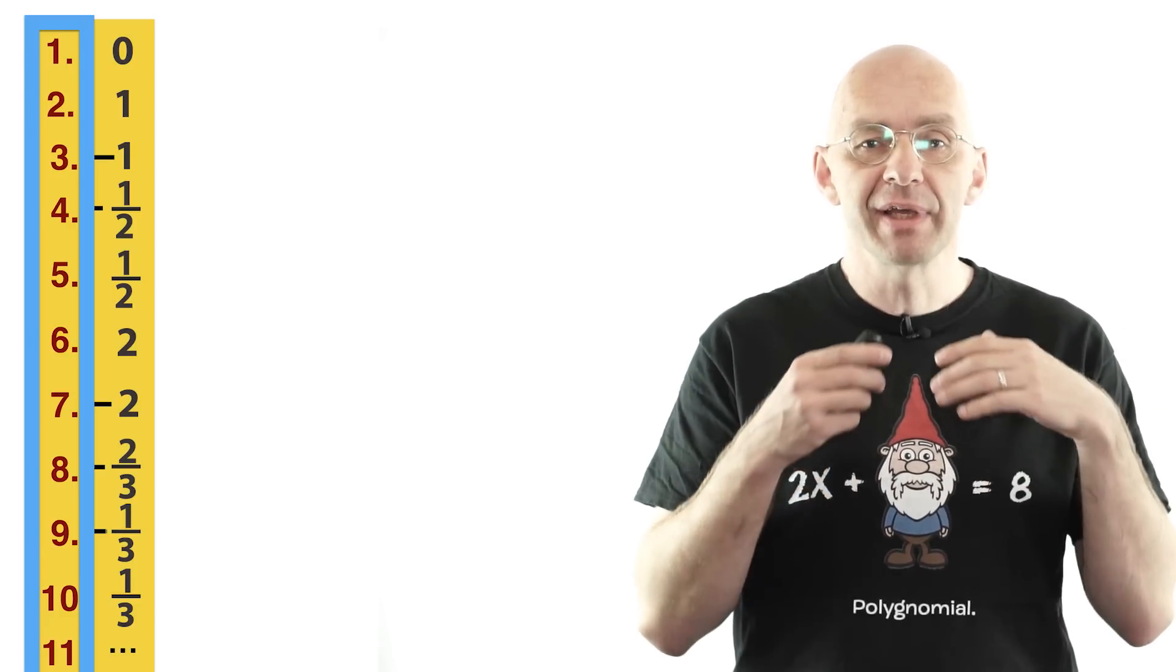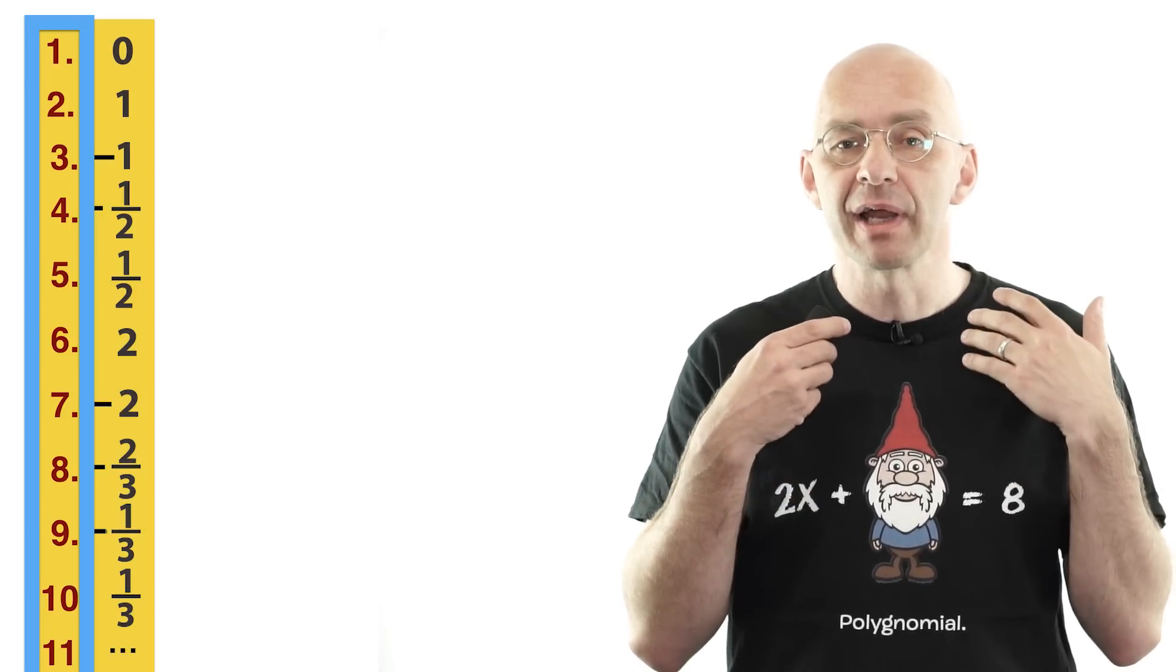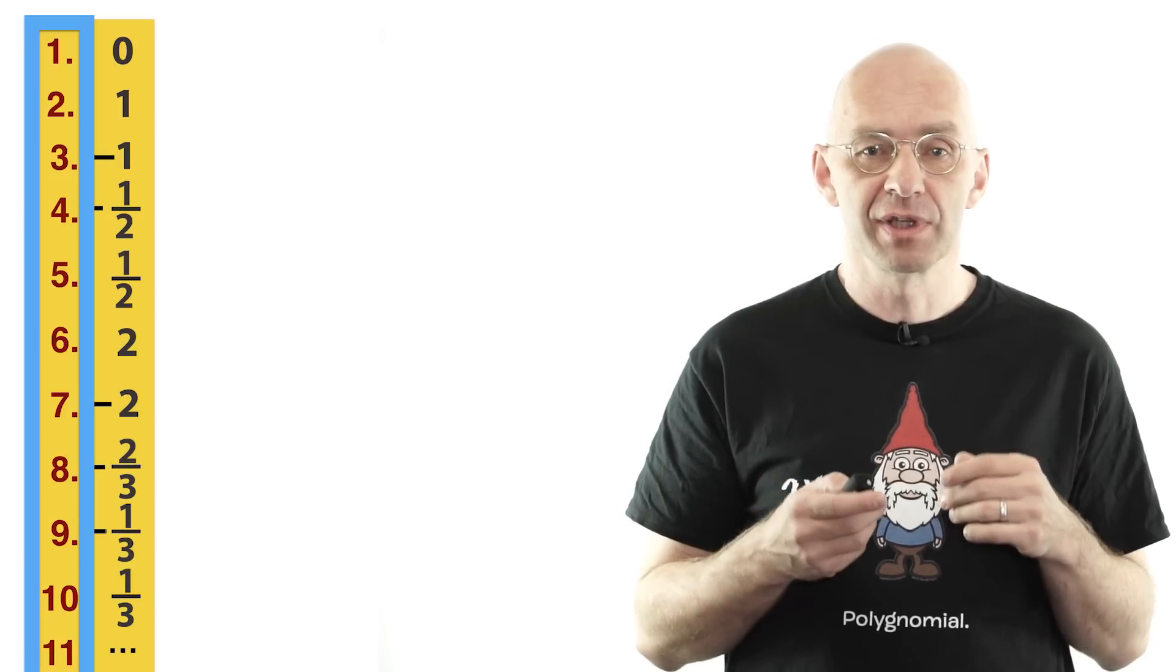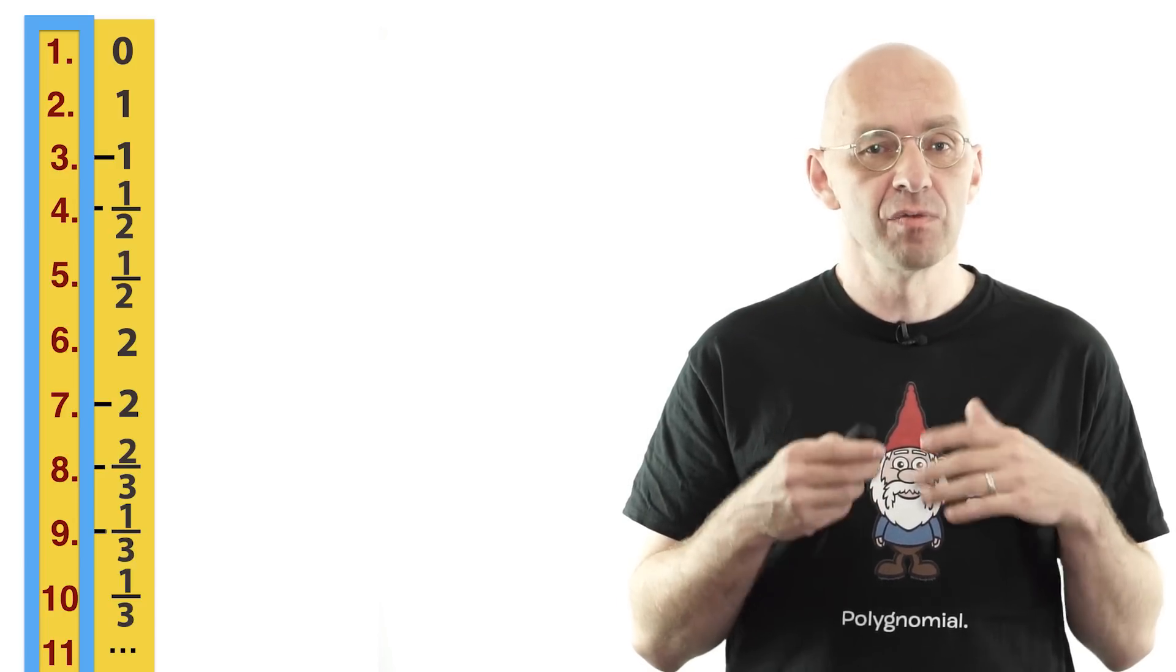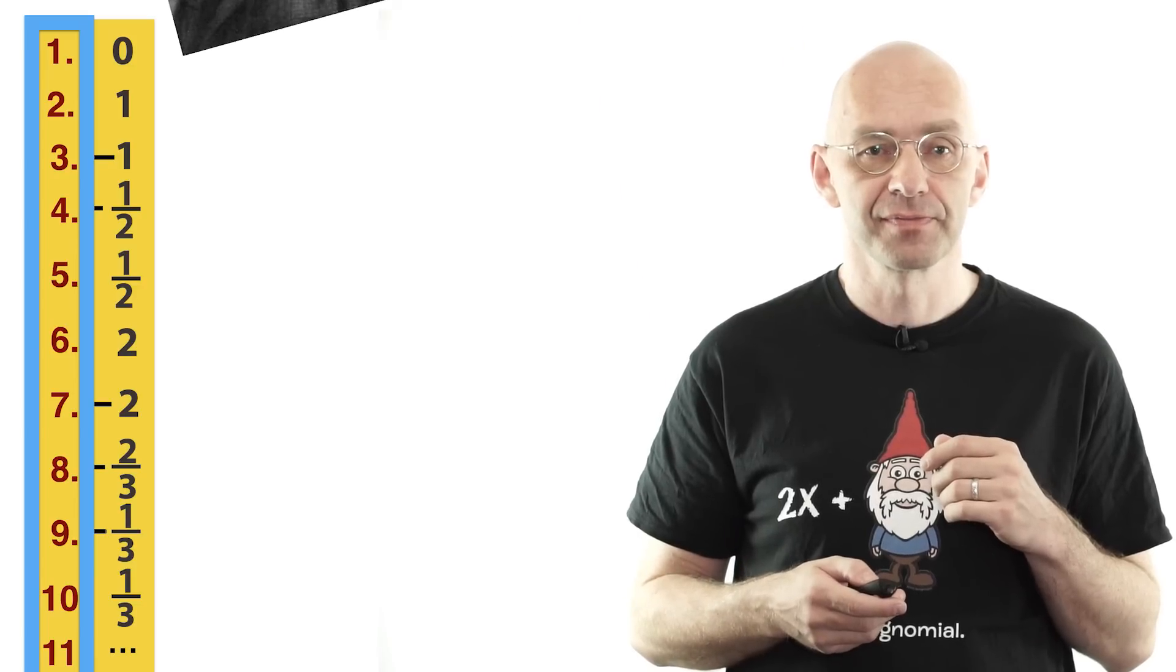Anyway, if you give me any countably infinite listable set, then I can make up a number outside this set using Cantor diagonalization, which is what our nifty construction method is often called.